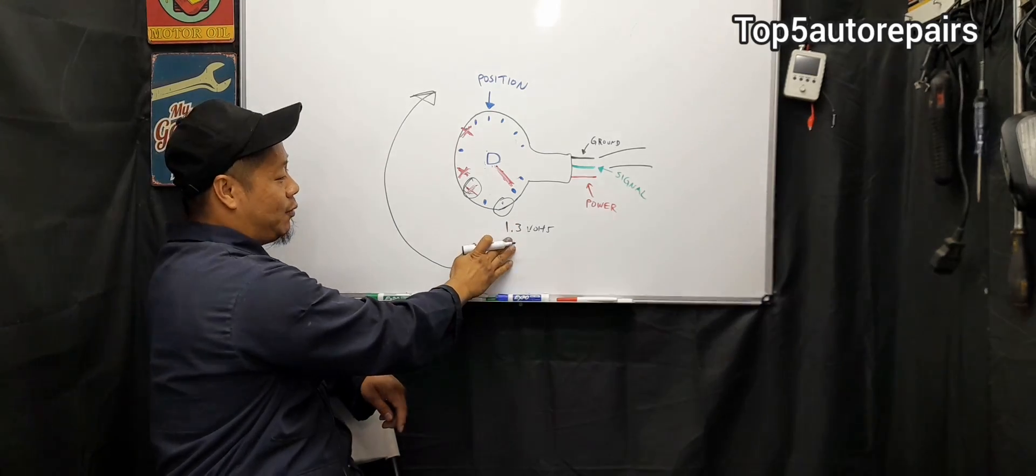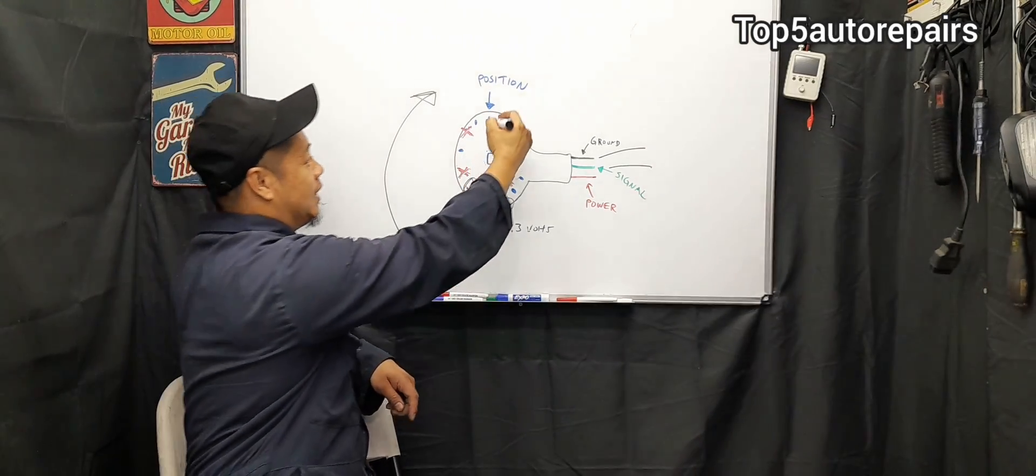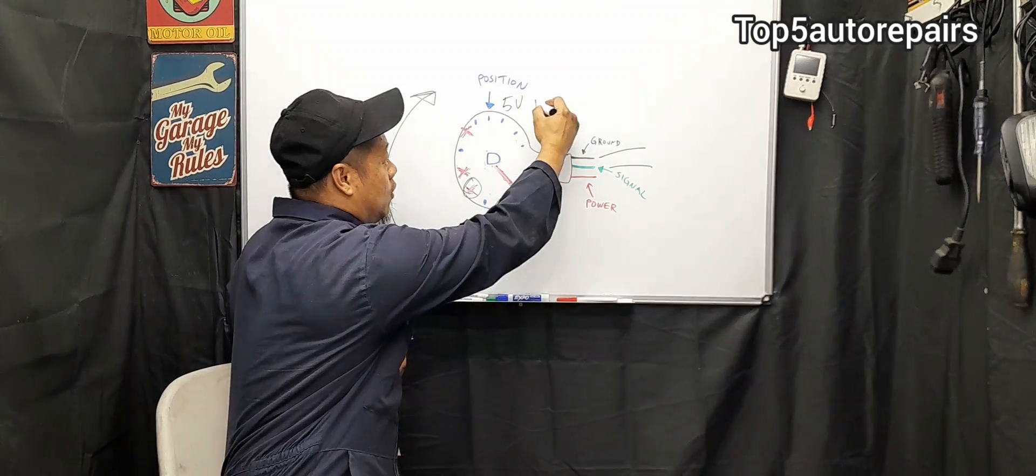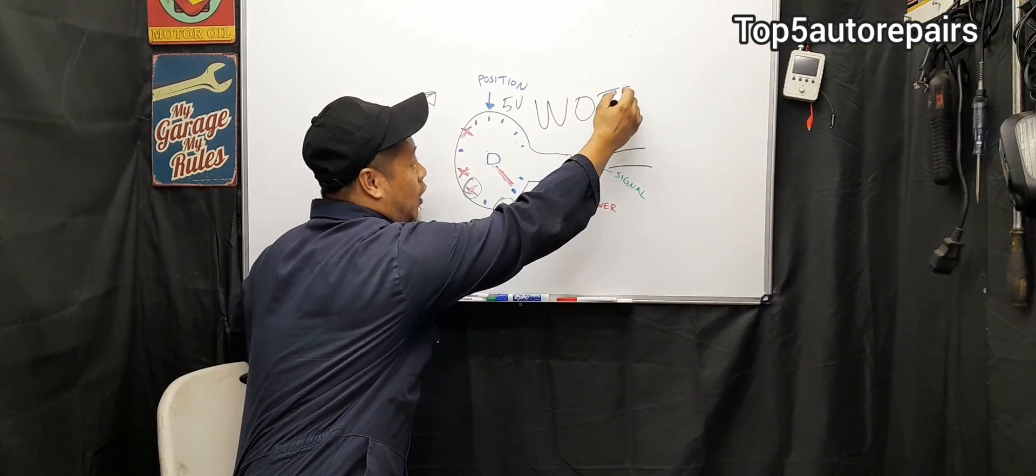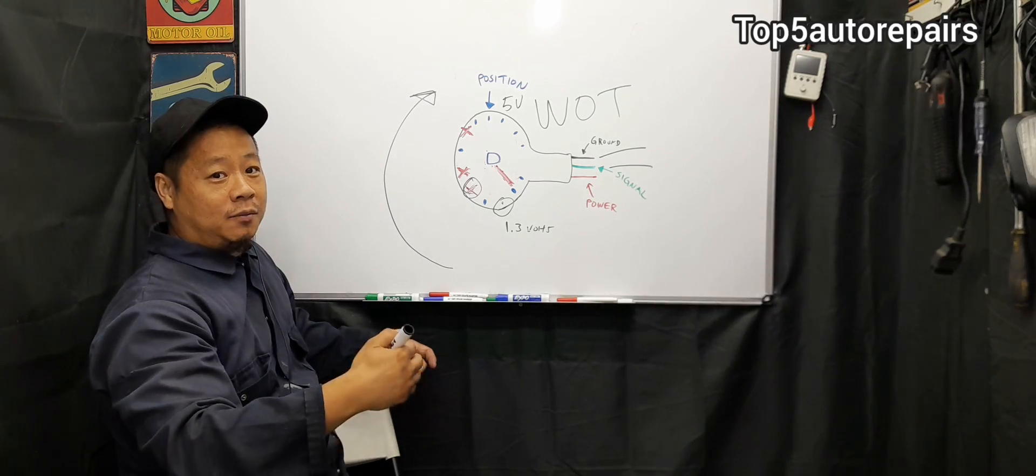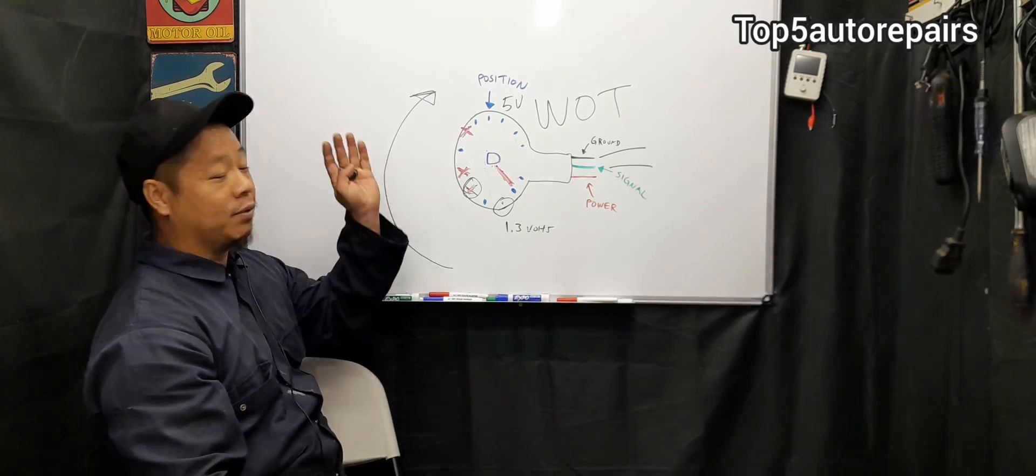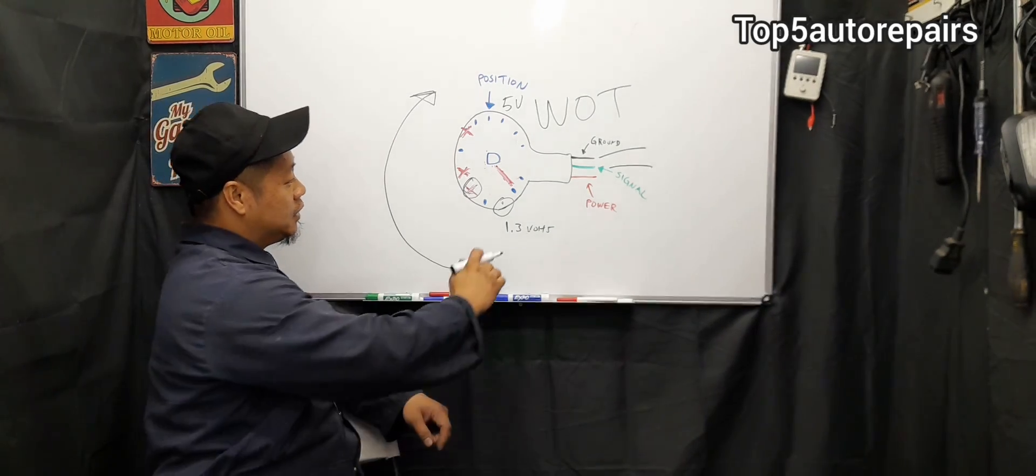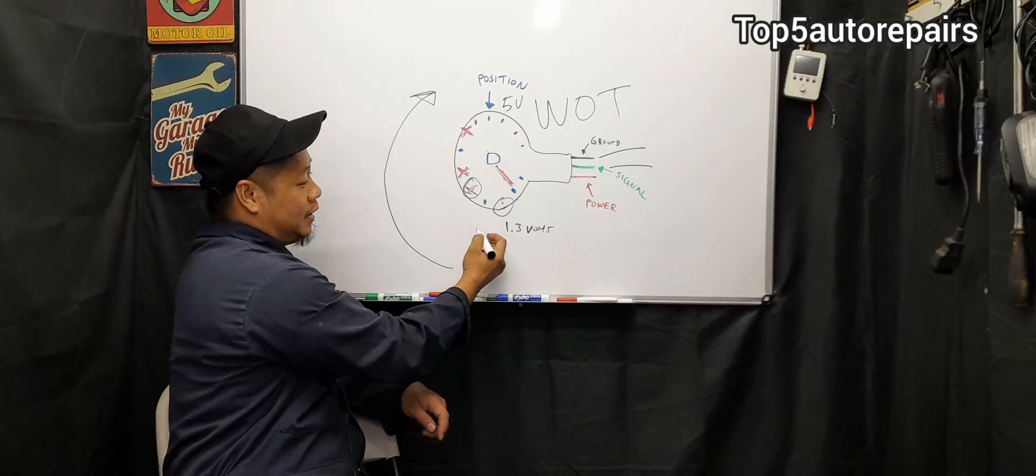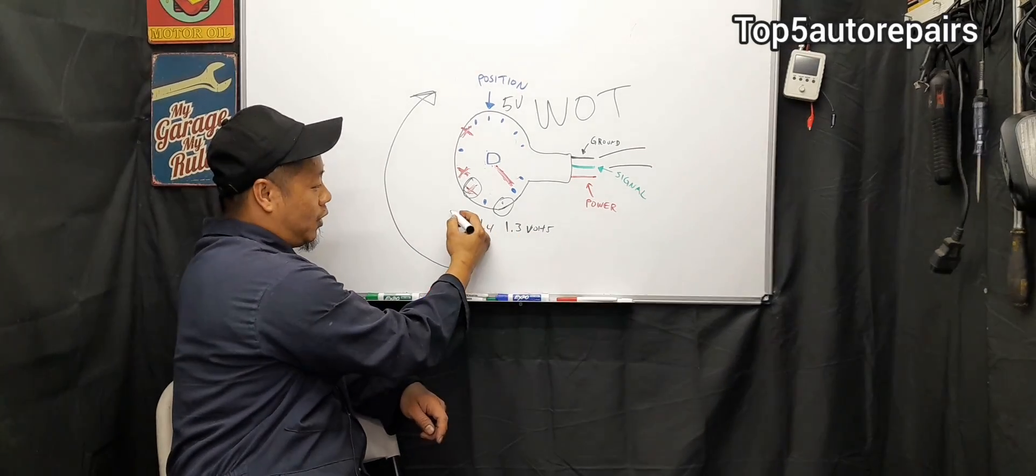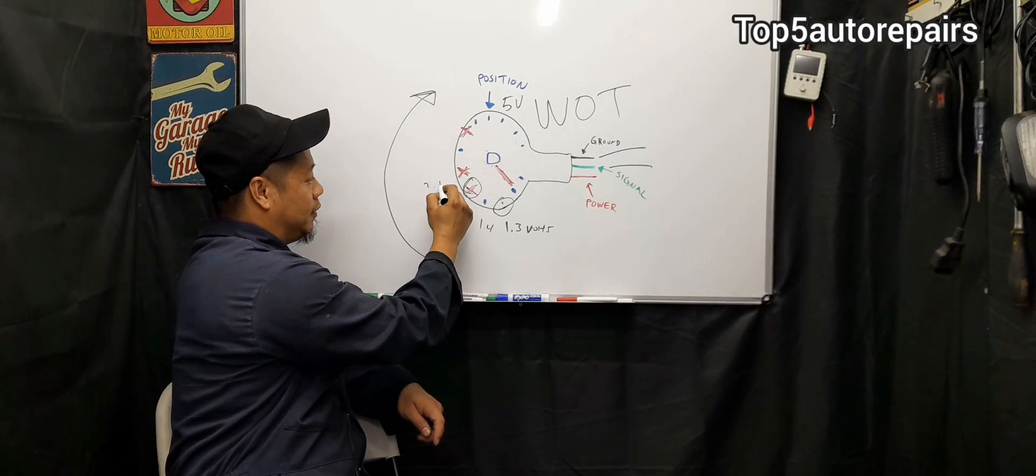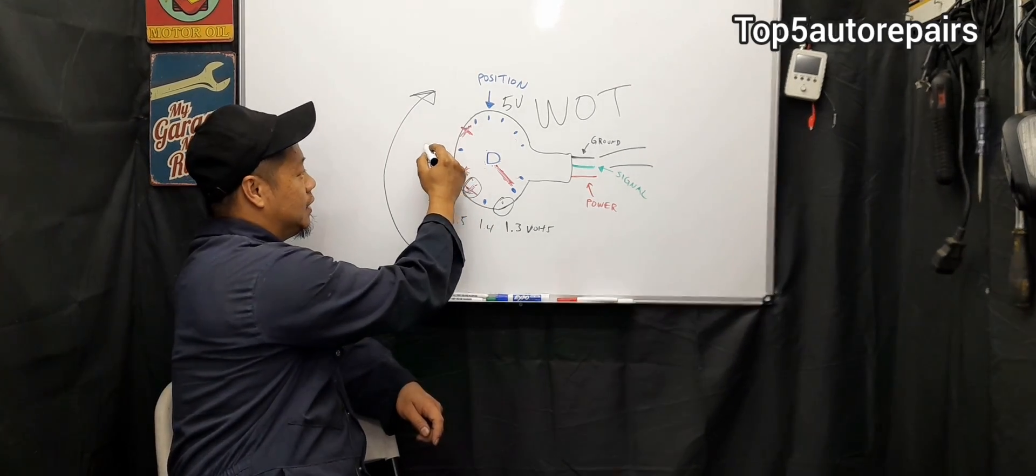For example, let's just say it starts at 1.3 volts, and it ends at 5 volts, and let's say 5 volts is wide open throttle. That's when you are going maybe like 80 miles per hour and over, completely wide open throttle. So again, you start at 1.3, that's idle, and it starts to sweep, it goes to 1.4, 1.5, it goes up to 2 volts, 2.4, 2.6, etc.